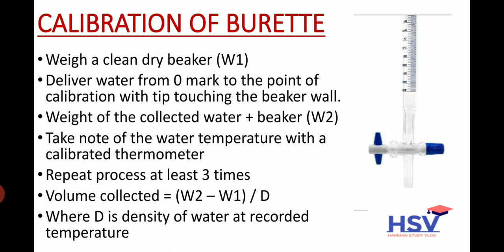To calibrate a burette: weigh a clean dry beaker (Weight 1), then deliver water from the zero mark to the point of calibration with the tip touching the beaker wall. The weight of the collected water plus beaker is Weight 2. Note the water temperature with a calibrated thermometer. Repeat the process at least three times. Volume collected = (Weight 2 − Weight 1) / d, where d is the density of water at the recorded temperature.